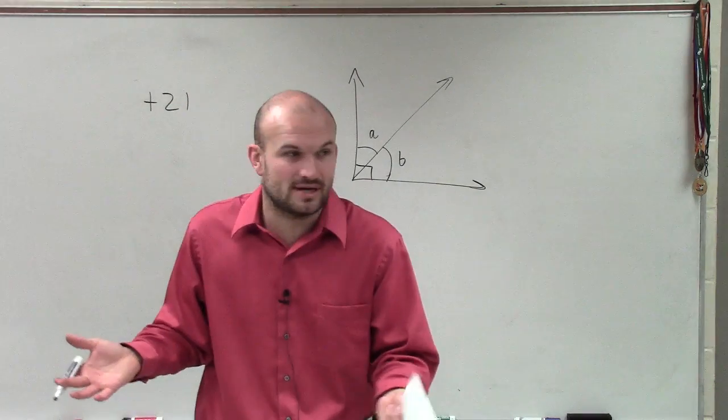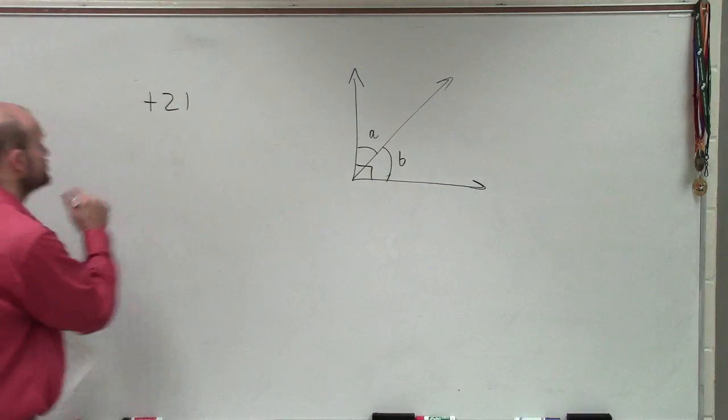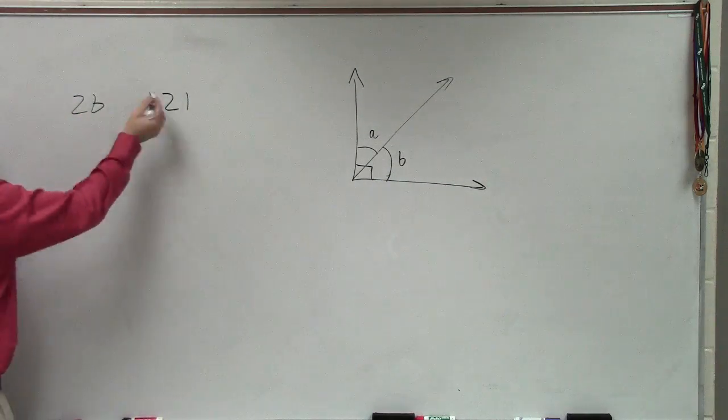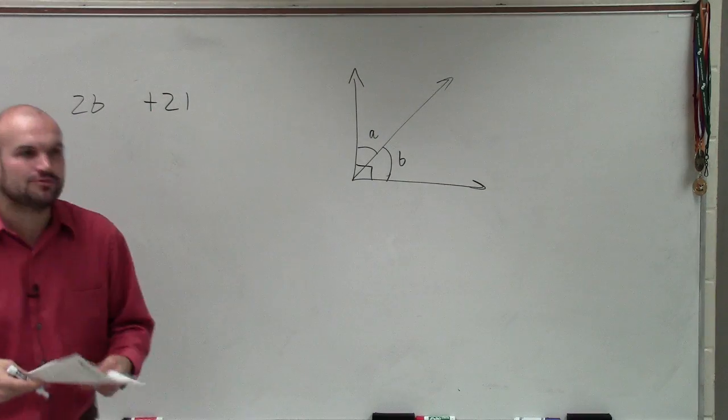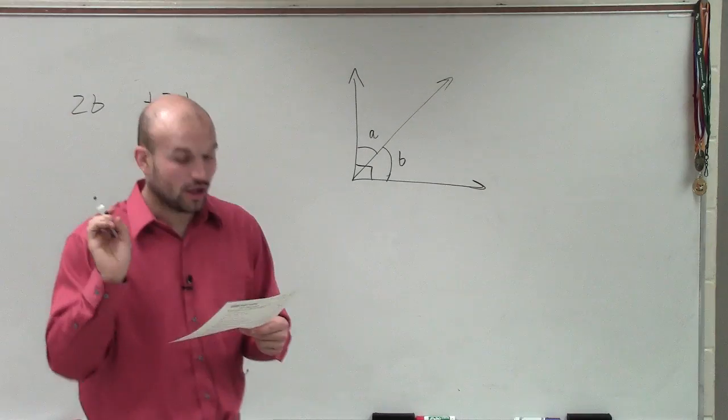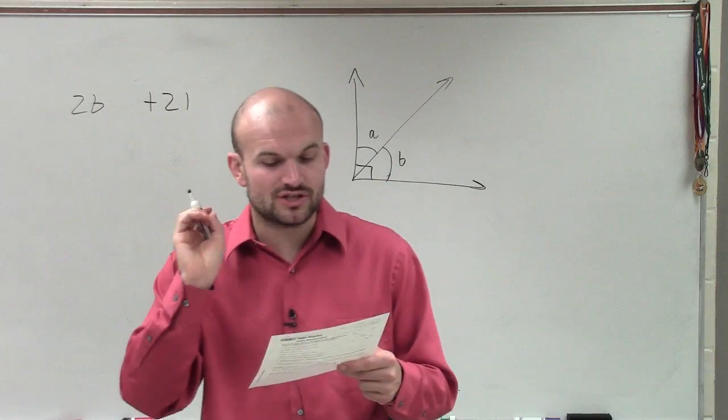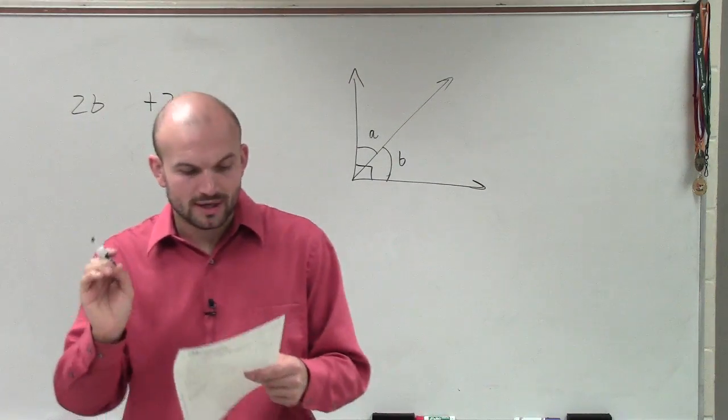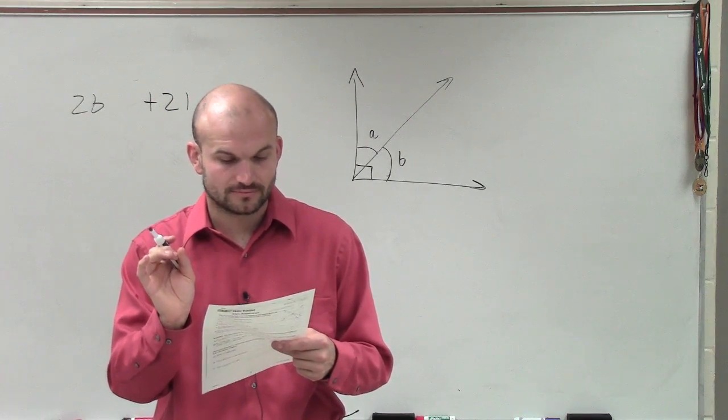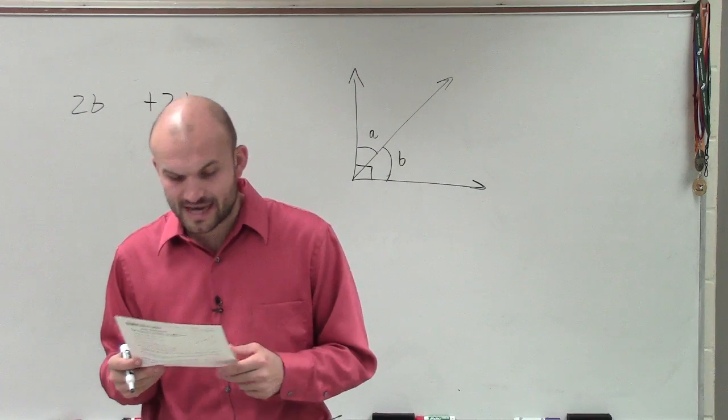So it's 21 more than twice the angle. Now, they didn't tell us what angle that was, right? So we can just assume, let's just pick an angle. Let's say if I double the angle, add 21, that's going to equal, well, all it says is the measure of one angle is 21 more than twice the measure of the other angle, right? Find the measures of the angle.